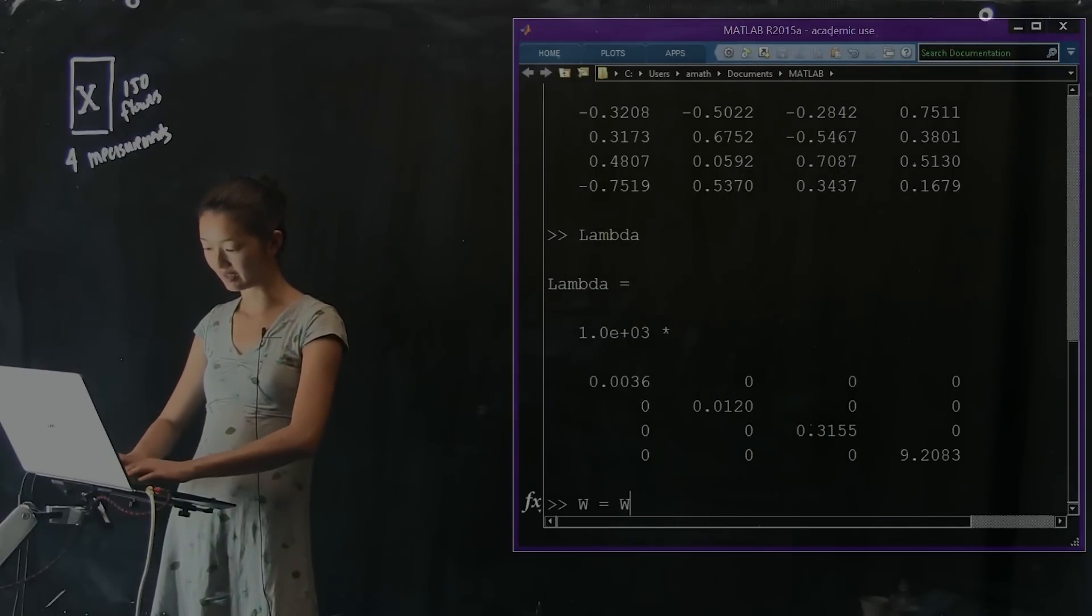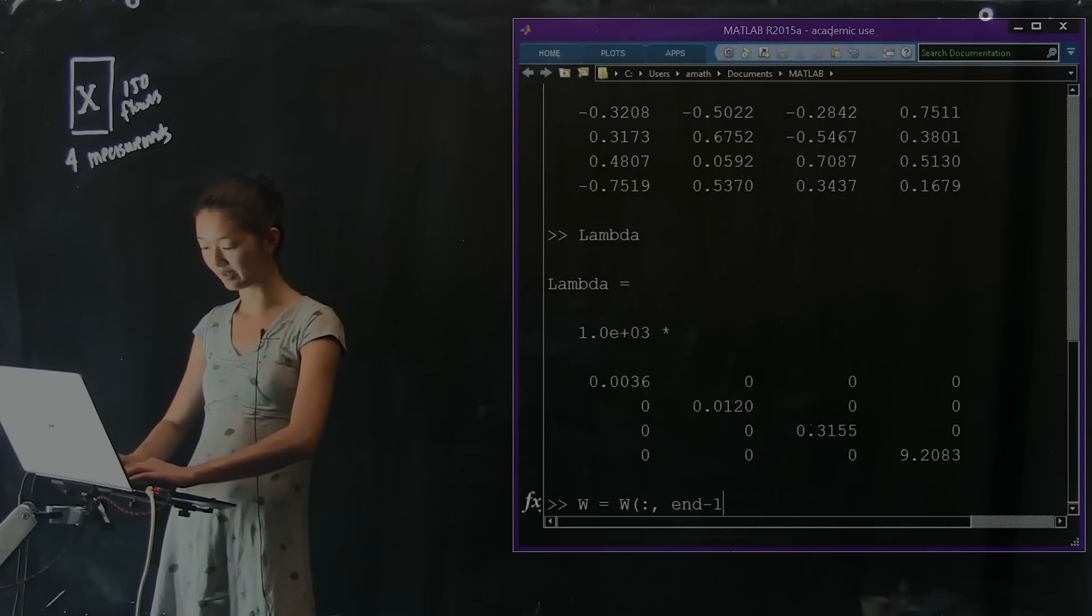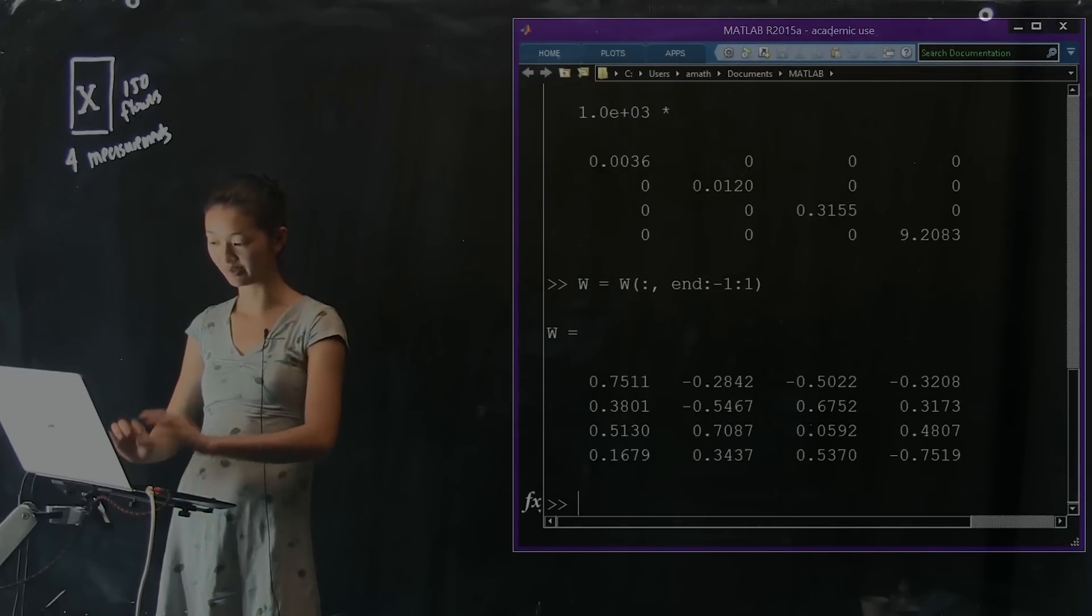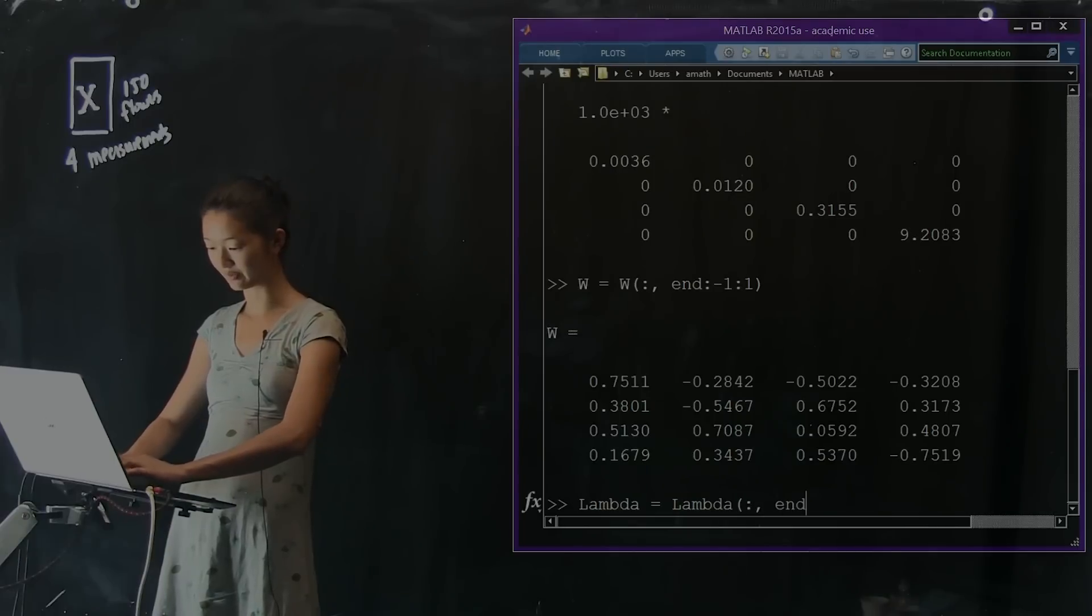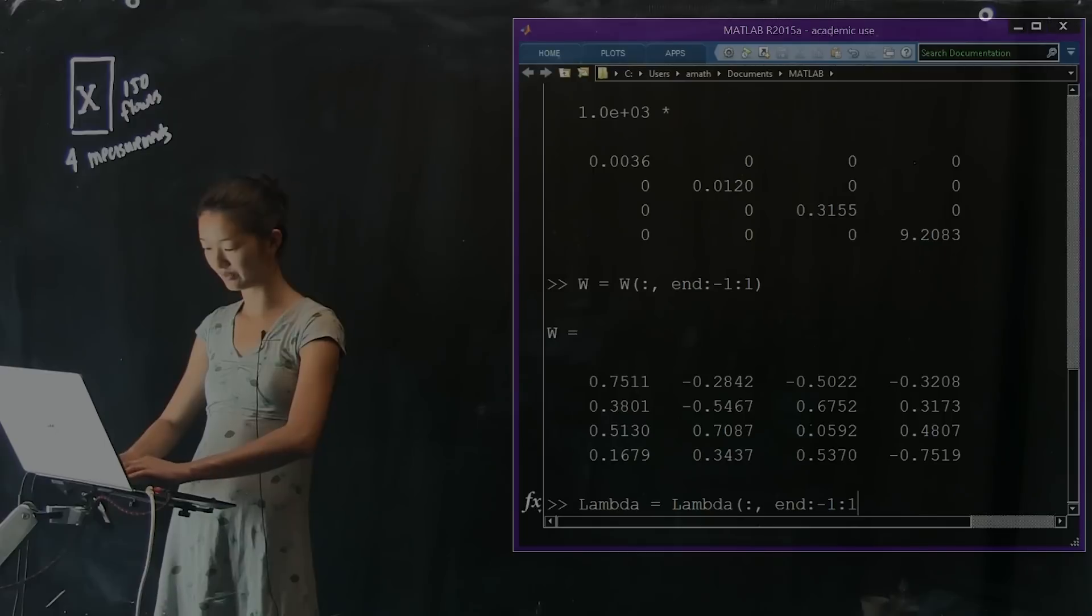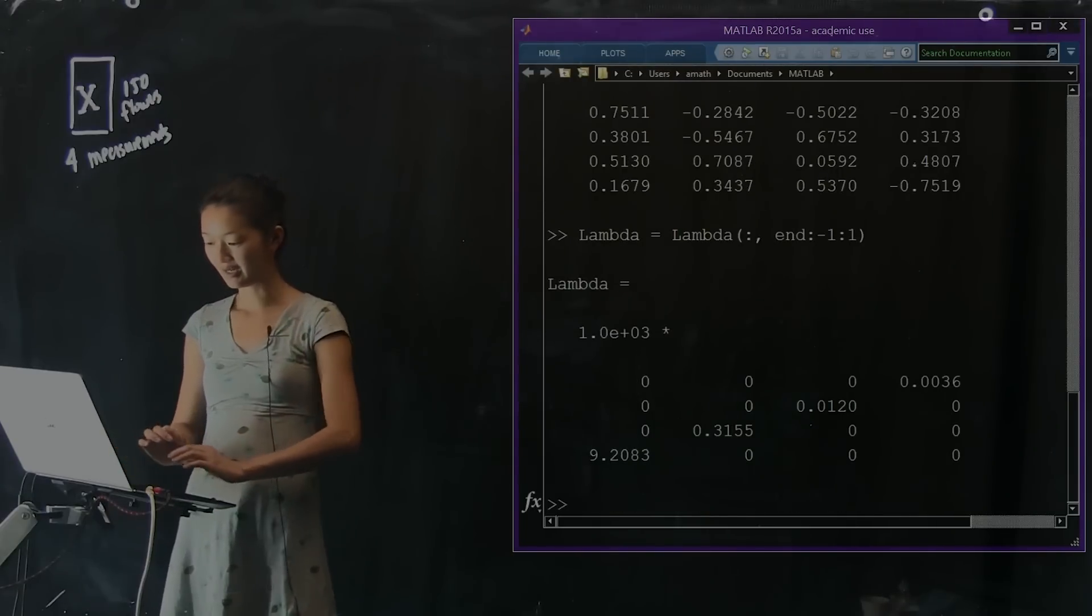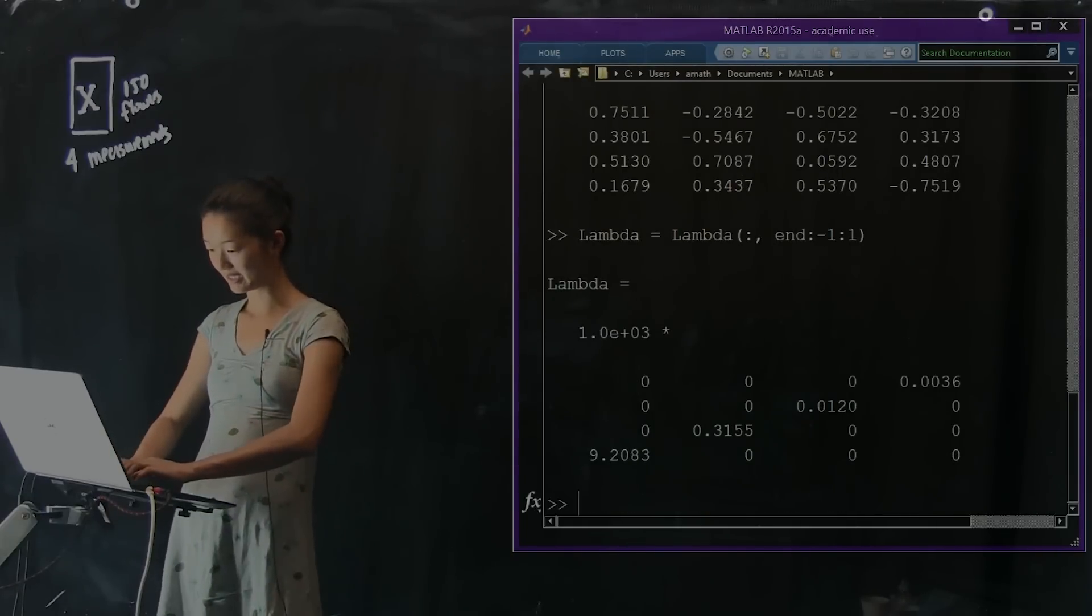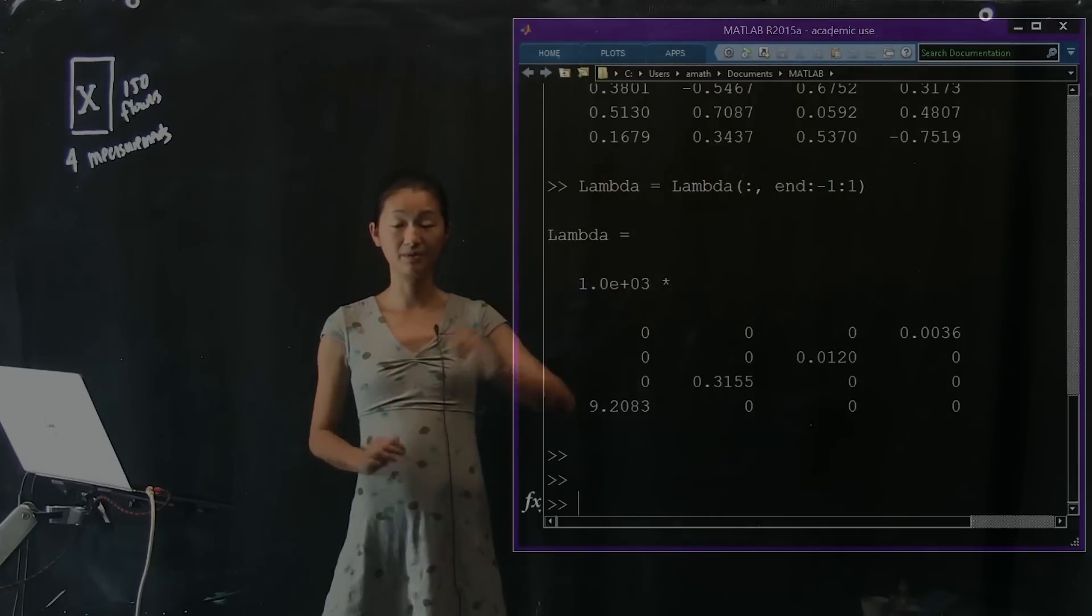So w, I'm going to say is w all of the rows, and I'm going to flip the columns by doing the following operation. So now everything's flipped, and I'm going to flip lambda as well so that there's still this correspondence. So that flips it. And I'm going to take lambda. So that is one way of computing the PCA.